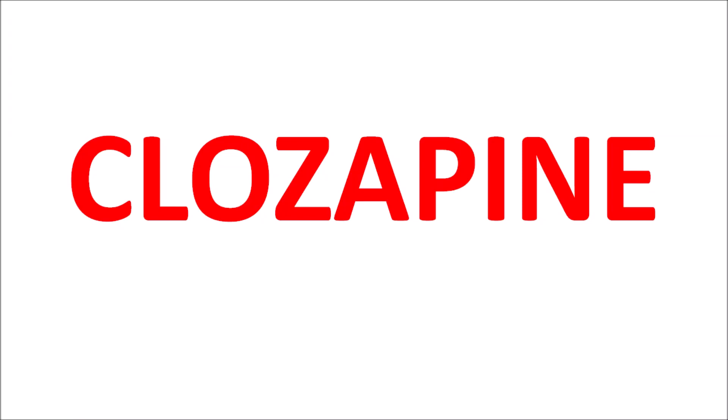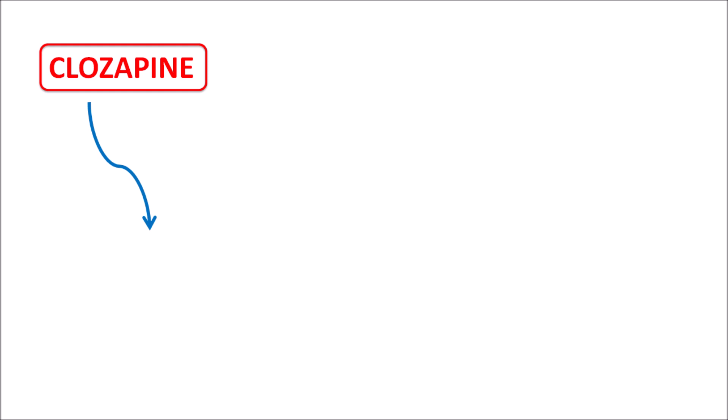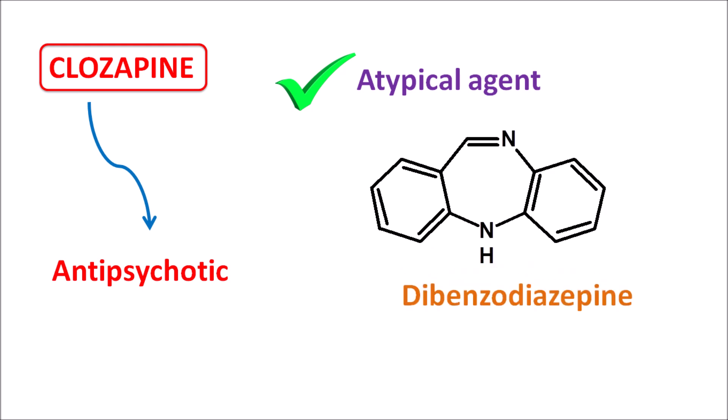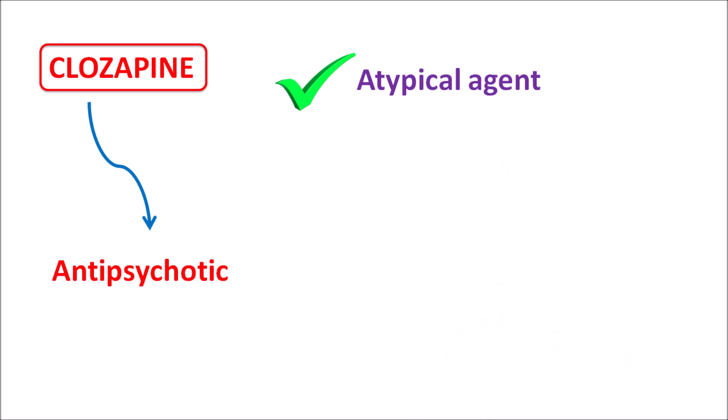Today in this video, let us discuss clozapine. Clozapine is one of the antipsychotics indicated for the treatment of schizophrenia. Among the antipsychotics, clozapine has many advantages. This drug is an atypical agent, and structurally clozapine is a dibenzodizepine, whereas typical antipsychotics are phenothiazine derivatives. Clozapine has a different chemical structure because of this structural modification.